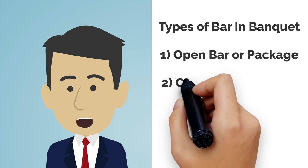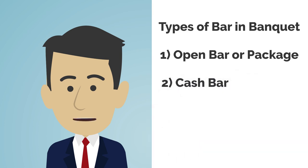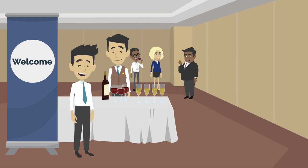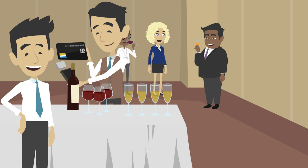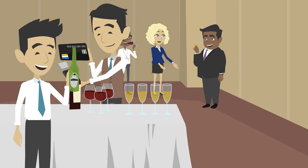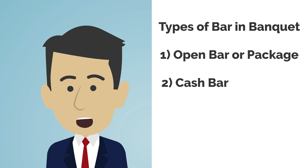The second type is a cash bar. It is popular for large conventions and meetings where pre-dinner cocktails can be purchased. Each guest pays for their drinks. There may be a cashier who collects the money and sells tickets, or the bartender may run their cash till. In the end, the cash receipts are closed just like a regular bar operation.